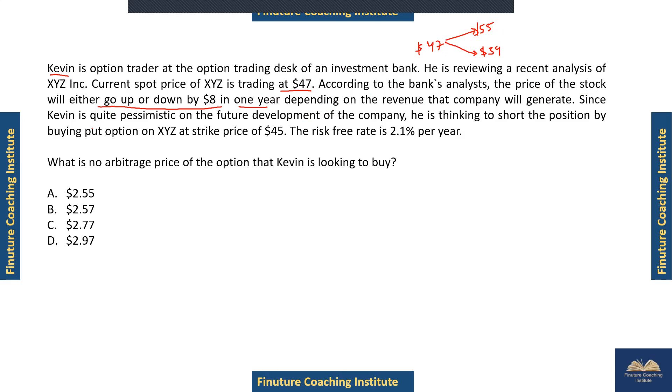So currently it's at $47, either it will move to $55 (up by $8) or down to $39 in a one-year time horizon, depending on the company's revenues. Since Kevin is quite pessimistic, he's thinking to take a short position by buying a put option at a strike price of $45, with a risk-free rate of 2.1%. What is the no-arbitrage price for the option Kevin is looking to buy?